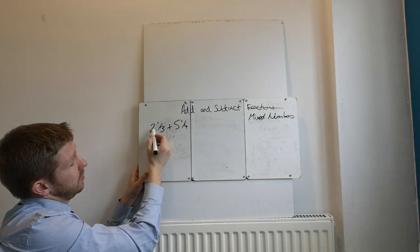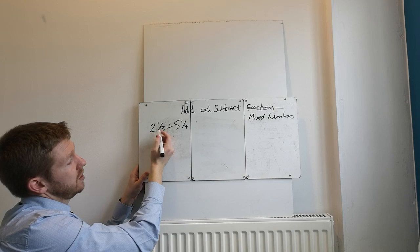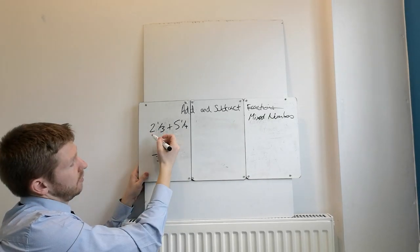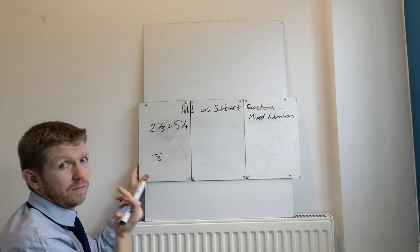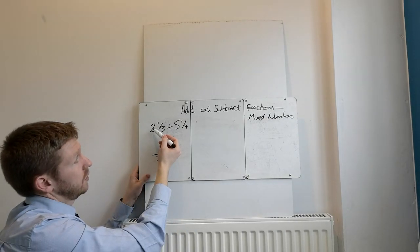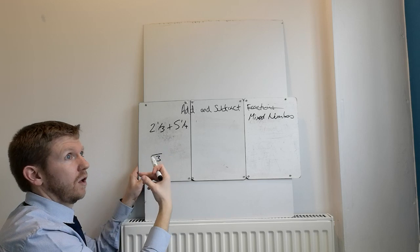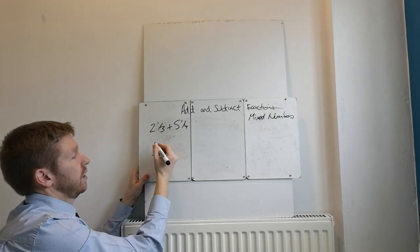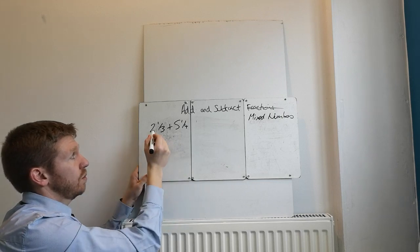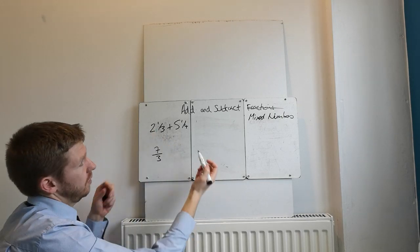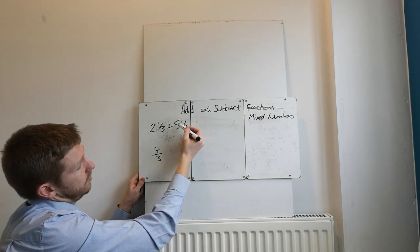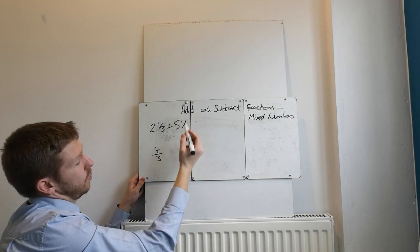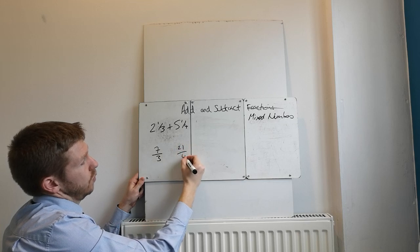So I would always tell you to change this into improper fractions. So the way we do that is, this is 2 whole ones and 1 third. We want to know how many thirds there are in total. So if you think, in 1 whole one there's 3 thirds. So in 2 whole ones there's 2 sets of 3. So 2 times 3, which is 6. Add the 1. There are 7 thirds. 2 and 1 third is actually 7 thirds. 5 and 1 quarter. Well, 5 times 4 is 20. Add the 1, 21 over 4.